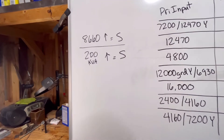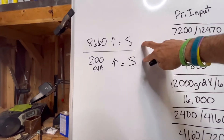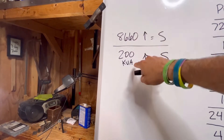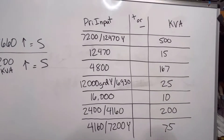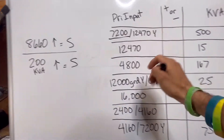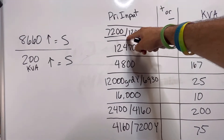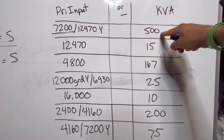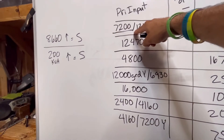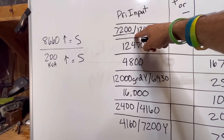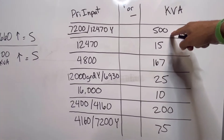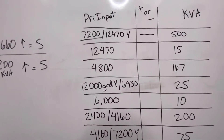In order for a transformer to be additive, it has to fall underneath both of these — so under 8660 volts and under 200 KVA. So the first one here: 7200-12470Y. That means my transformer requires 7200 volts input. It's a 500 KVA transformer. It only has to meet one of those qualifications. So here I am under 8660, but I am over the 200 KVA requirement. Therefore, this transformer will automatically be subtractive.